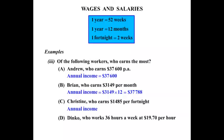Now the annual income for Christine. She's getting $1,485 per fortnight. We know there are 52 weeks in a year, so dividing by 2 gives us 26 fortnights in a year — that's also very useful to know. So we multiply $1,485 by 26 and we get $38,610.